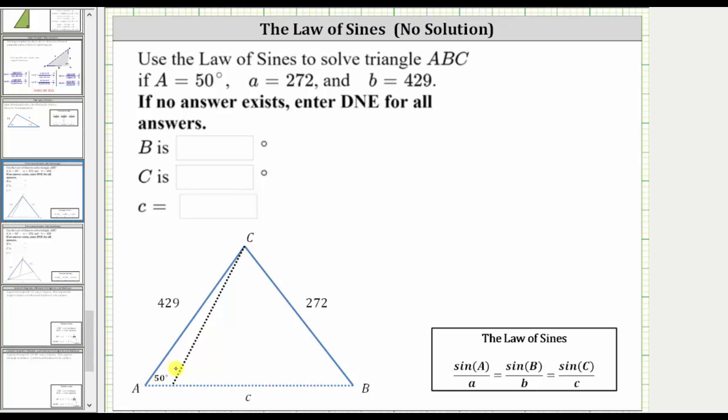Let's begin with sine A divided by the length of side A, which gives us sine 50 degrees divided by 272, must equal the sine of B divided by 429.